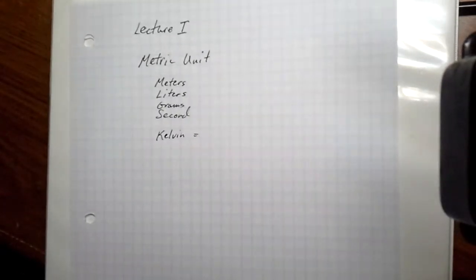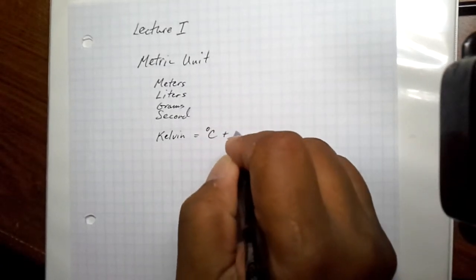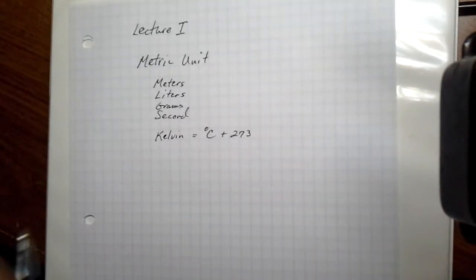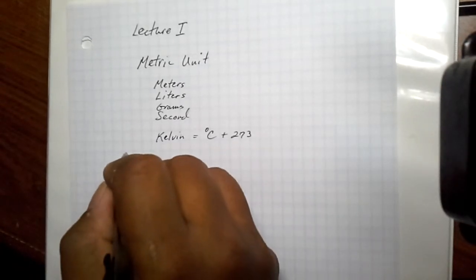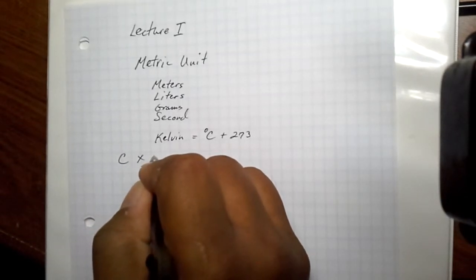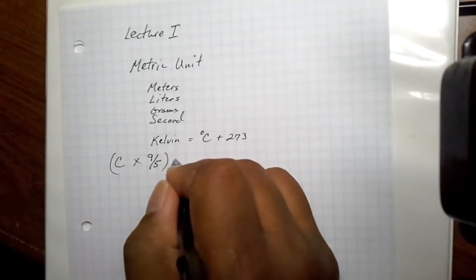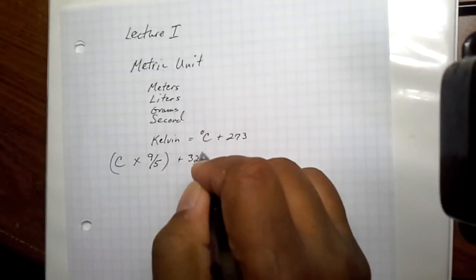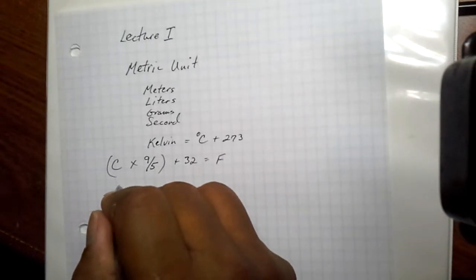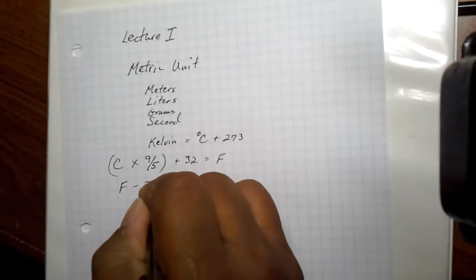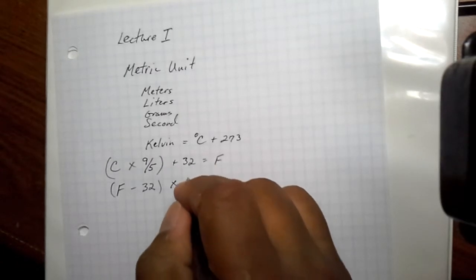And the calculation to get degrees Kelvin is to take our degrees Celsius and add 273. If we're converting from Celsius to Fahrenheit, we tend really not to do that very often. We take the degrees Celsius times 9/5 plus 32 degrees to get Fahrenheit. Or if we want to go from Fahrenheit to Celsius, it's Fahrenheit minus 32 times 5/9.